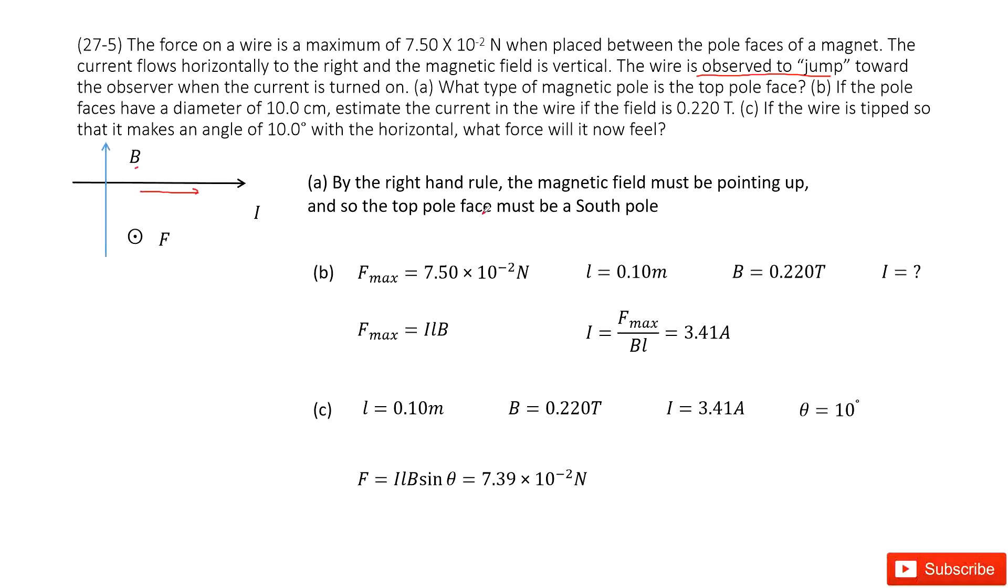Second one, if the pole faces have a diameter of 10 centimeters, find the current in the wire if the field is 0.22 teslas. So how can we do that? First, we write down the magnetic force. The length of the wire is given, the magnetic field is given, find the current. This is easy.